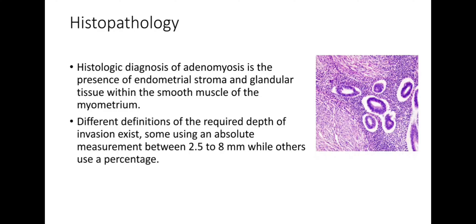Histopathology: the histologic diagnosis of adenomyosis is the presence of endometrial stroma and glandular tissue within the smooth muscle of the myometrium. There are different definitions of the required depth of invasion — some use an absolute measurement between 2.5 to 8 millimeters, while others use a percentage. There are also several histologic grading classifications that attempt to characterize the burden of the disease.